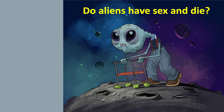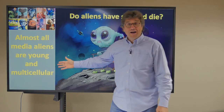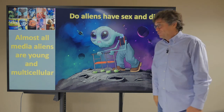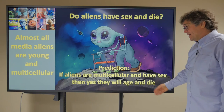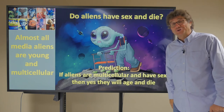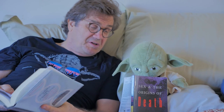Remember, somatic cells are all the cells of your body that are not gametes to be passed on. So we ask: do aliens have sex and die? When you look in the media, almost all aliens are young and multicellular. The conclusion is that if aliens are multicellular and have sex, then yes, they will age and they will die — just a prediction. So, Yoda, on Earth meiotic sex and death evolved about two billion years ago. Do you know if on your planet sex and multicellularity and death evolved? If they didn't, maybe you're not going to die — maybe you're immortal. So you don't need to keep reading about this sex stuff.